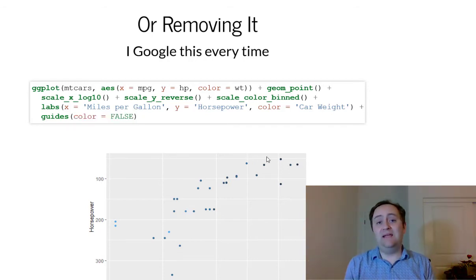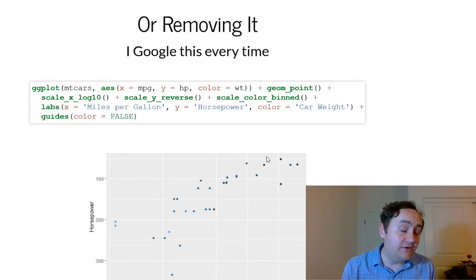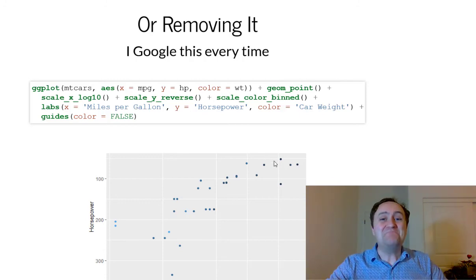And that's pretty much it. That's how you can add labels to your axes on ggplot2, and also how you can move the legend around, retitle it, or get rid of it altogether. Thank you.